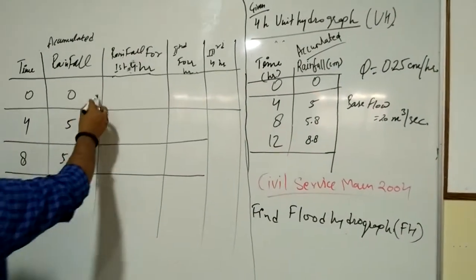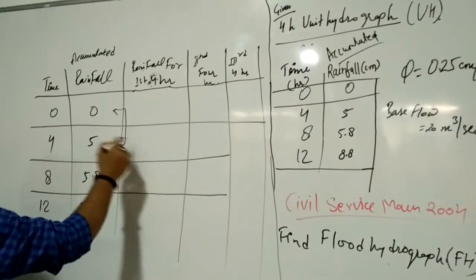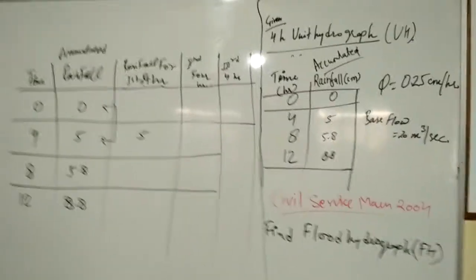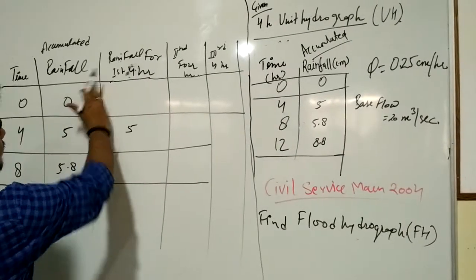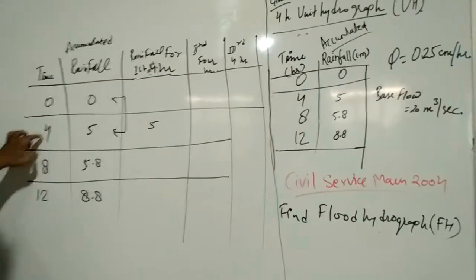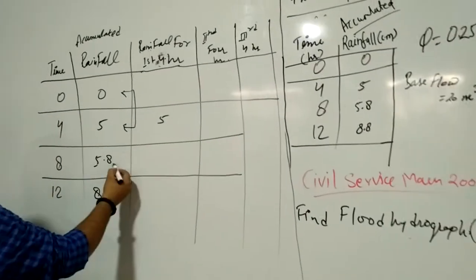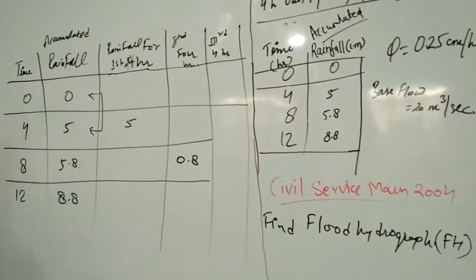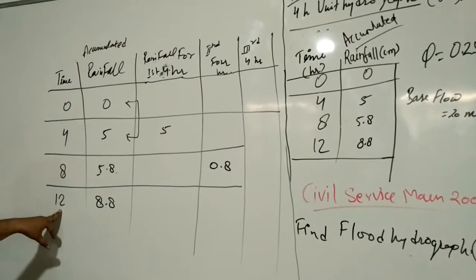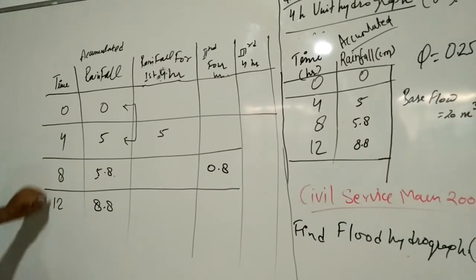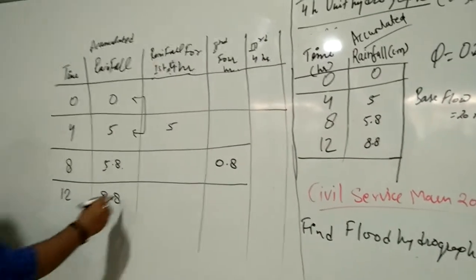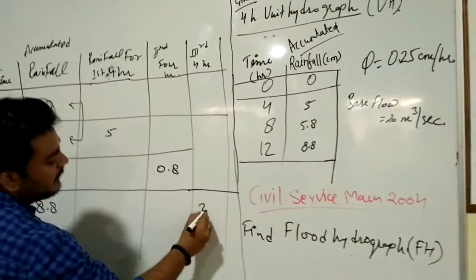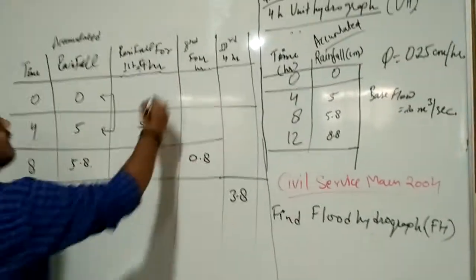Rainfall intensity in the first four hours is calculated as the difference between readings. For the second four-hour period, from 4 to 8 hours, the rainfall intensity is 5.8 minus 5, which equals 0.8. For the third four-hour period, from 8 to 12 hours, the rainfall intensity is 12 minus 5.8 minus 5.8, calculated to be 3.8 centimeters.